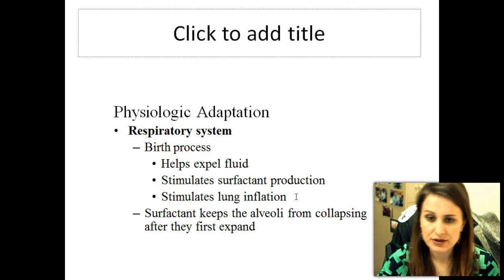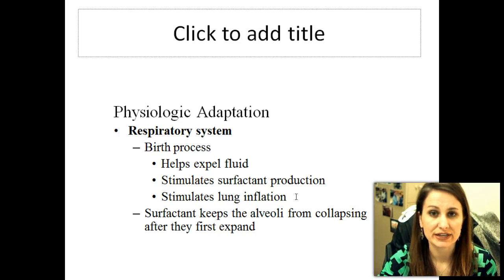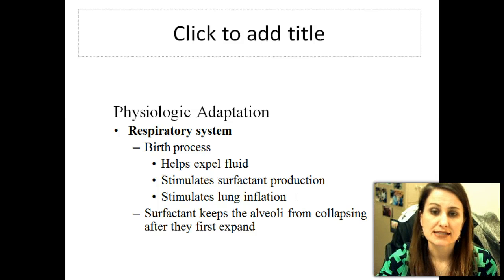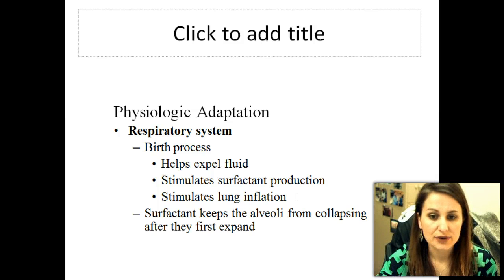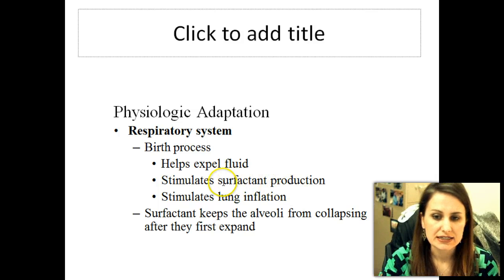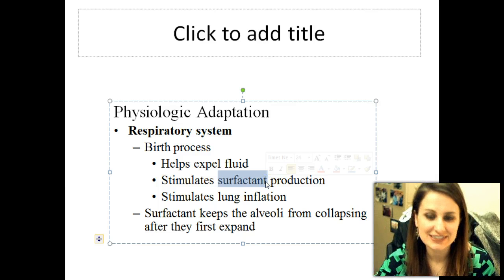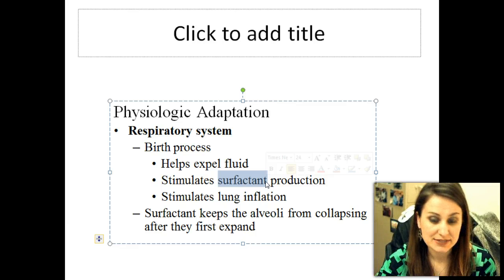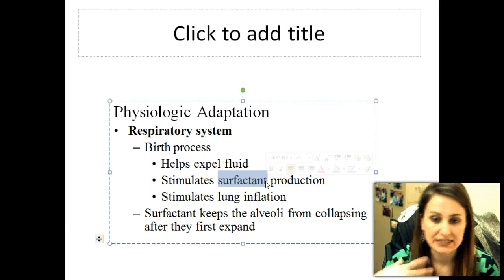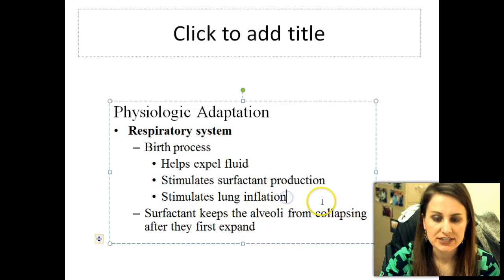When you're thinking about a baby in utero, remember that he is not using his lungs at this point — they're filled with fluid. The birth process, however, helps expel that fluid. It stimulates surfactant production, and remember that surfactant is the stuff that opens up the lungs. It's a substance found in the lungs of mature babies. It keeps those alveoli from collapsing, and then it stimulates lung inflation.